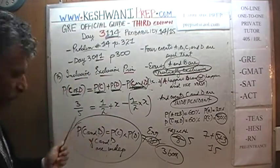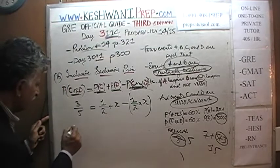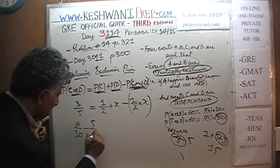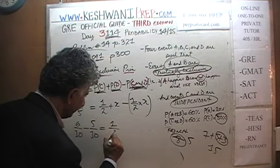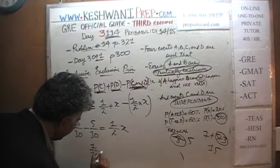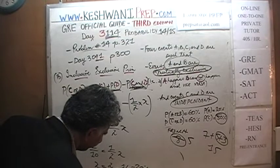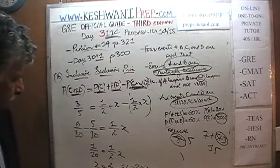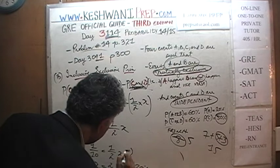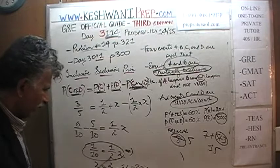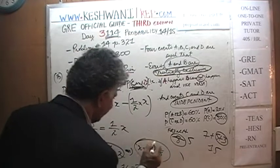The probability of C or D is 60%, probability of C is 50% — that's one half. Probability of D is X, our unknown. Since they are independent, probability of C and D equals one half times X. So: 3/5 minus 1/2 equals 1/10. That means 1/10 equals half of X, so X equals 2/10, which is 1/5 — or 20%. The probability of event D is 20%.